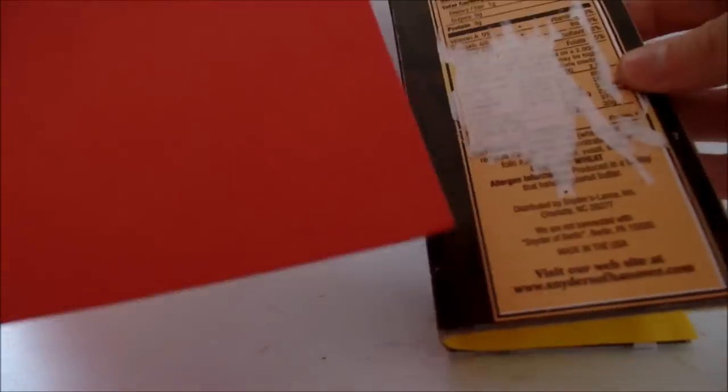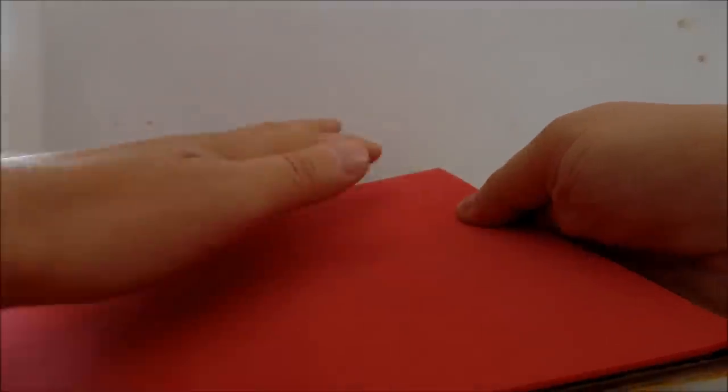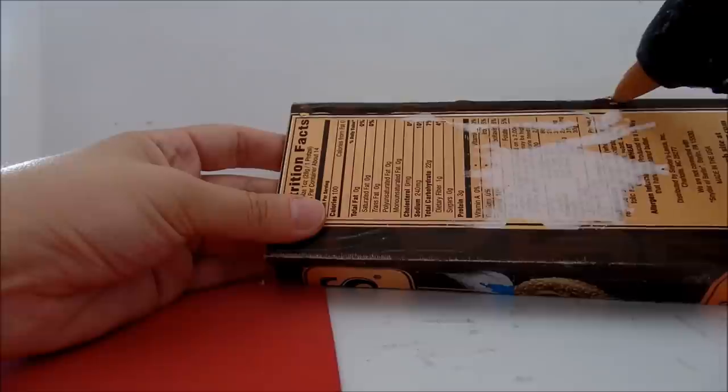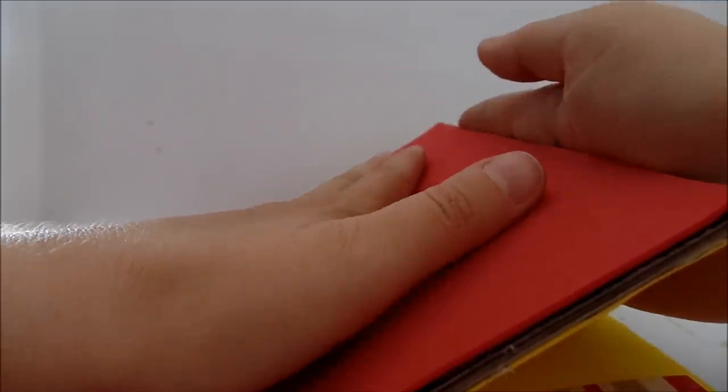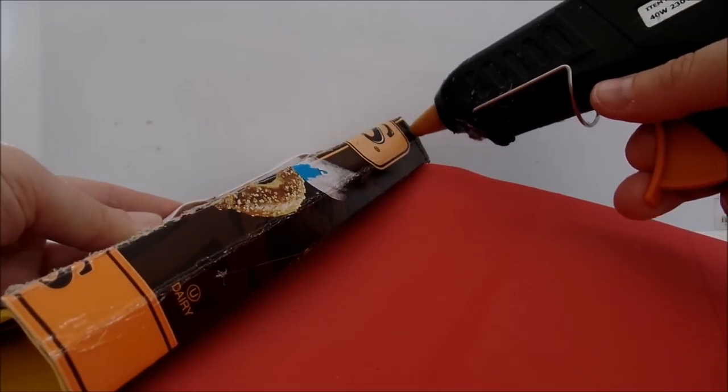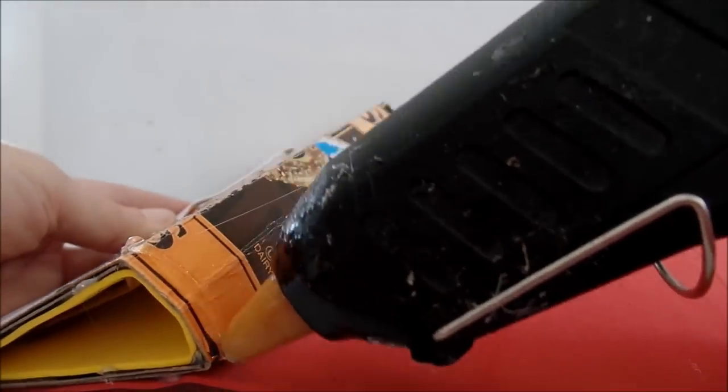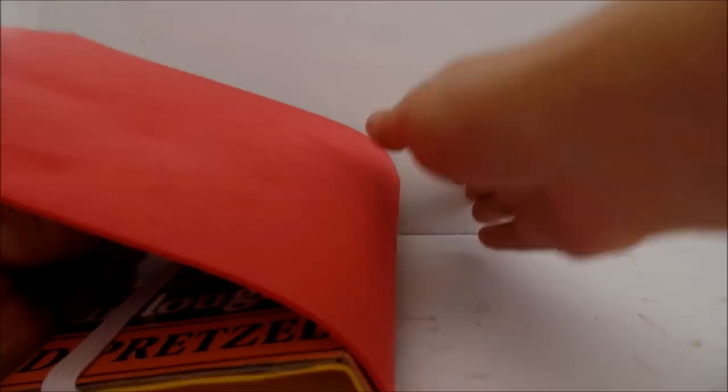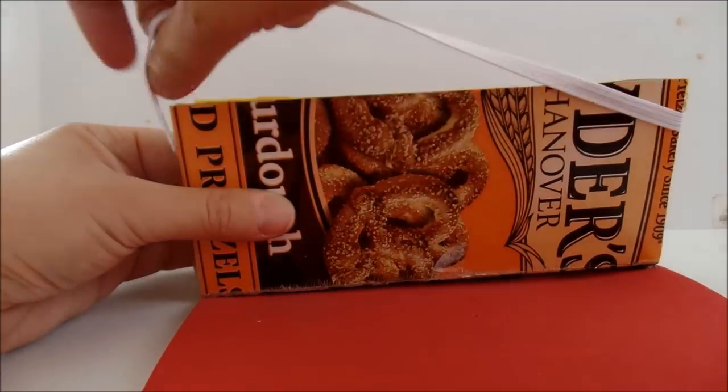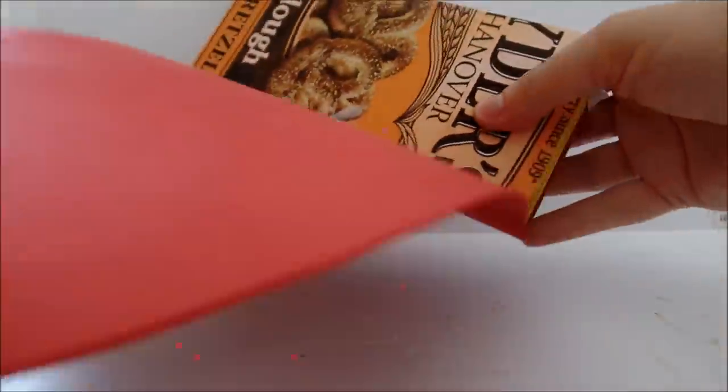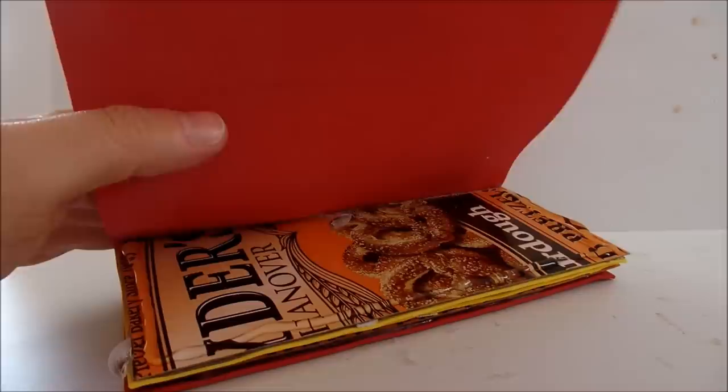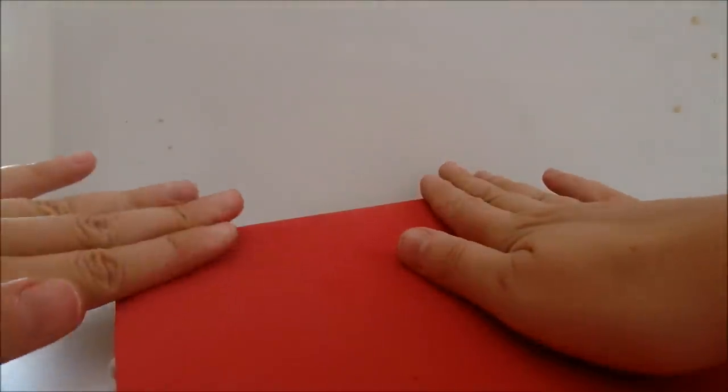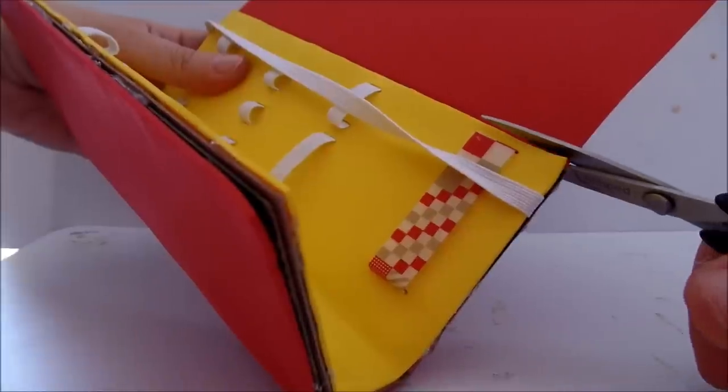Now take another piece of foam and start gluing it around the pencil case on the outside. Let this piece free and continue gluing. Trim off the excess.